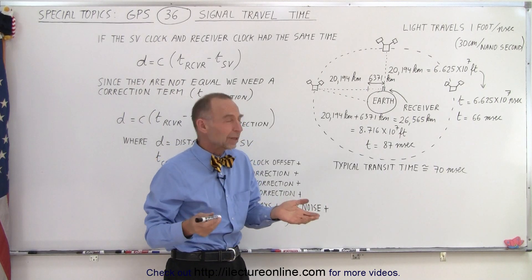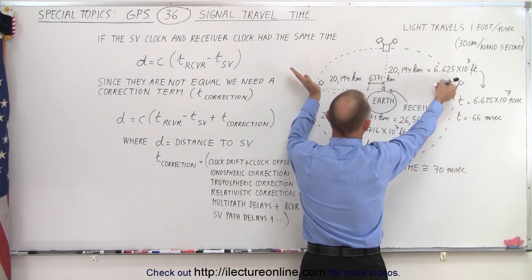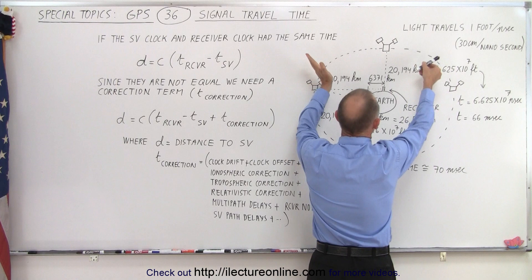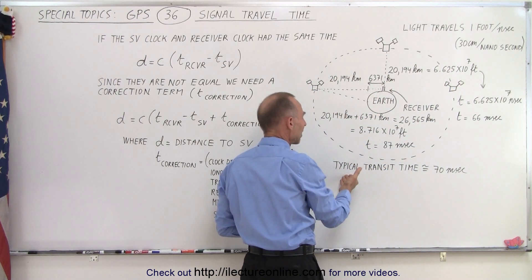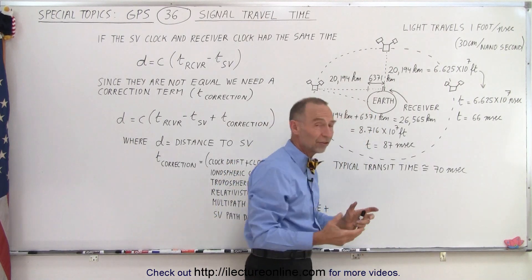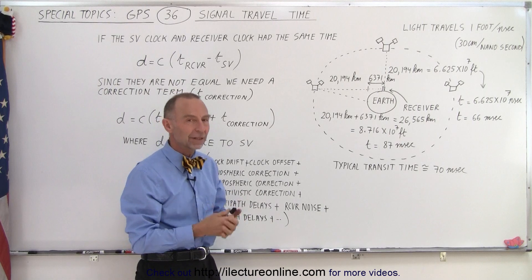We realize that we really don't pick up satellites that are at the horizon. We pick up satellites that are at least about 5 or 10 degrees above the horizon and more typically even further up. We can say that the average or typical transit time for a signal between the SVs and the receivers is about 70 milliseconds.